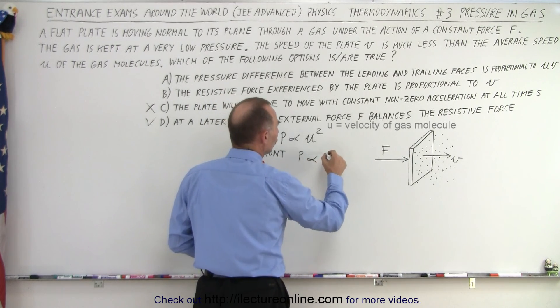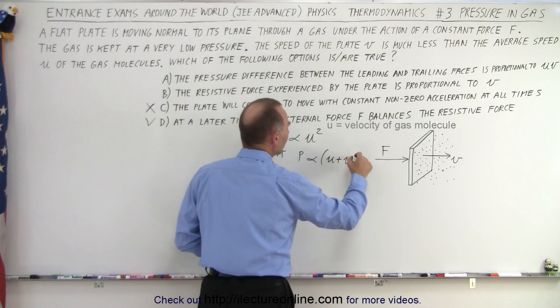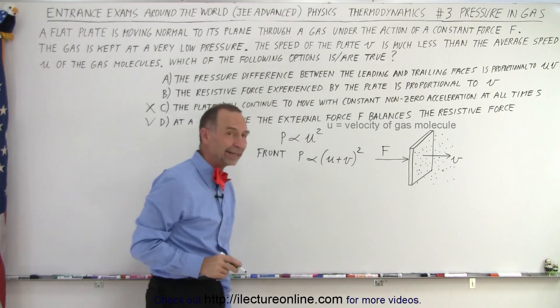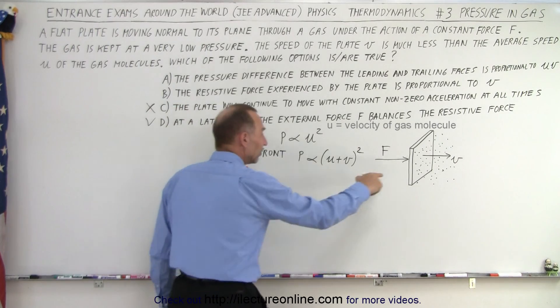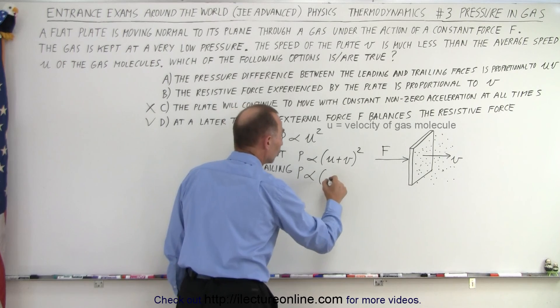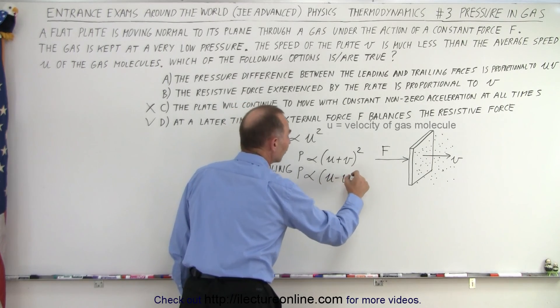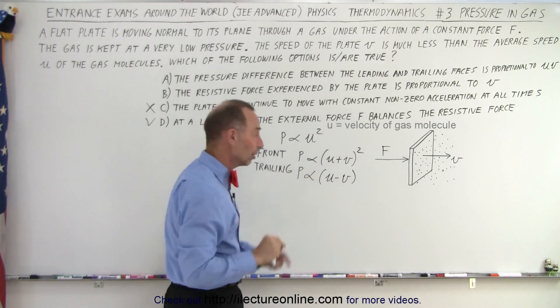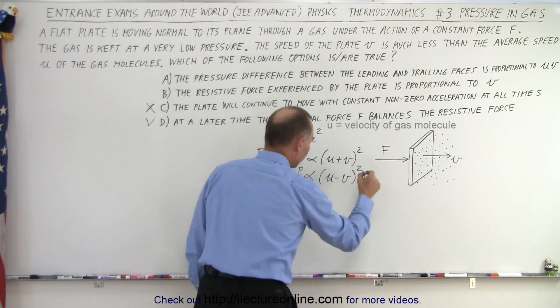So on the front end, the pressure will be equal to or will be proportional to U plus V quantity squared, the velocity of the molecules plus the velocity of the plate. On the back end, on the trailing end, the pressure is proportional to U minus V because the trailing end is moving away from the molecules pushing into the plate. And of course we have to square that as well.